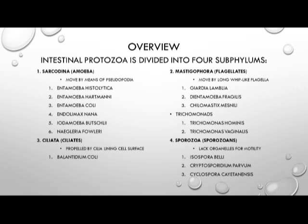Our third subphylum is Ciliata, or the ciliates, and they are propelled by cilia lining the cell surface of the organism. The only organism we're going to cover in this subphylum is Balantidium coli. Our last subphylum is Sporozoa, or the sporozoans, and these actually lack organelles for motility. The organisms in this group include Isospora belli, Cryptosporidium parvum, and Cyclospora cayetanensis.